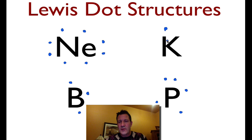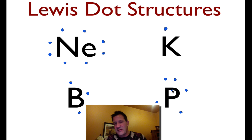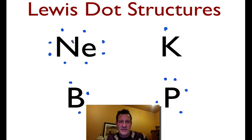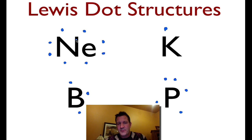Any group one element is going to have this Lewis structure, any group 13 element is going to have this Lewis structure, and any group 15 element is going to have this Lewis structure with five valence shell electrons, because that's what the groups are — they have the same valence shell electrons. And all the noble gases will have this valence shell electron configuration.